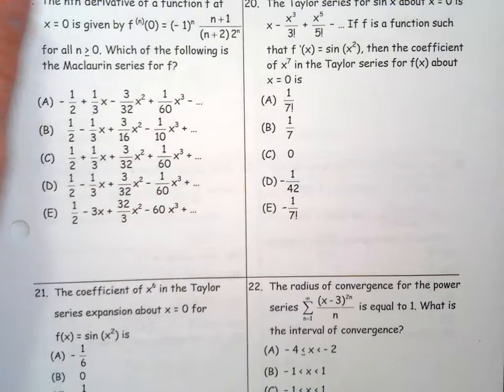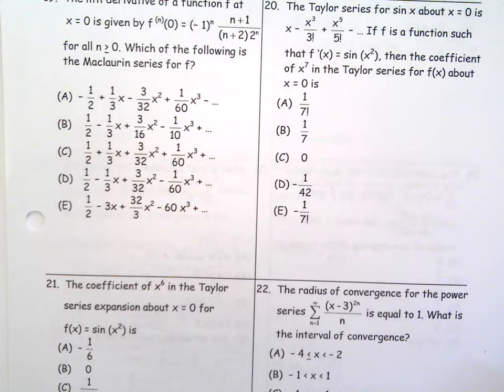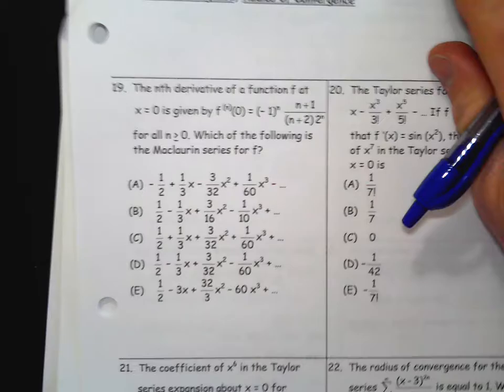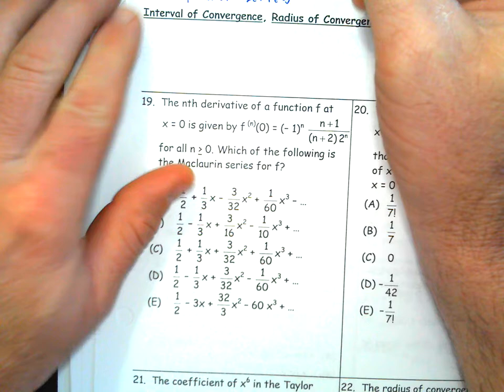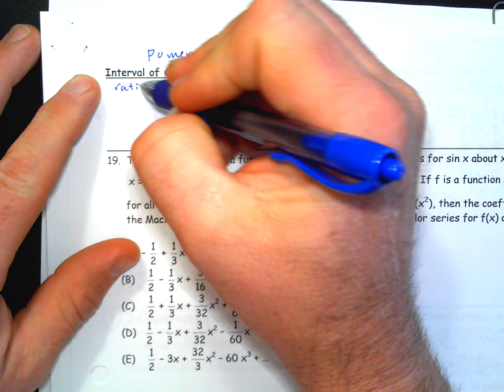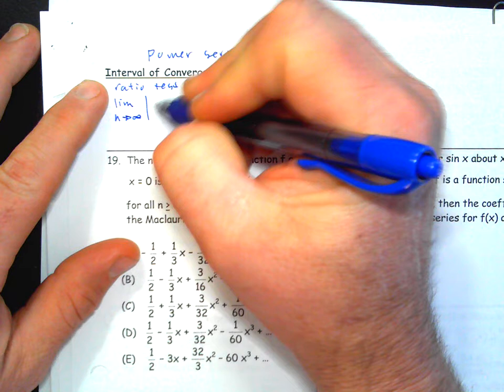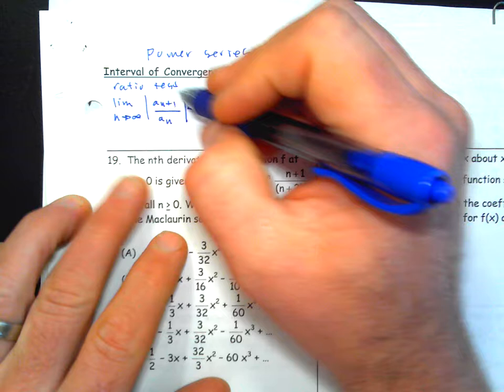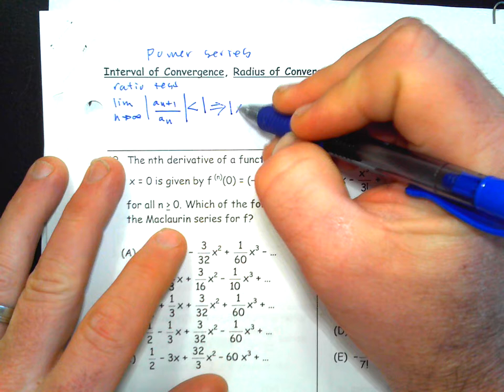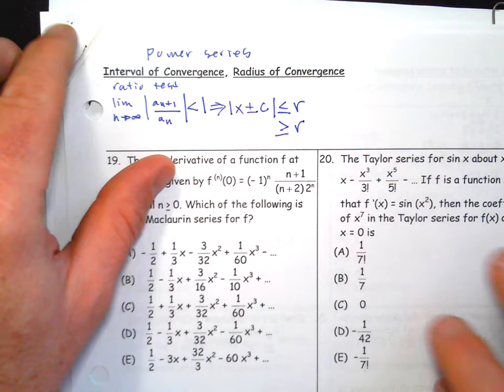For power series: they have x's in them, so we're looking for where they converge. We do the ratio test — the limit as n goes to infinity of the absolute value of a(n+1) over a(n) has to be less than 1. We use this to get an absolute value inequality that we then solve. Usually what we eventually get is the absolute value of (x minus the center) less than or equal to R, and that R is the radius of convergence.